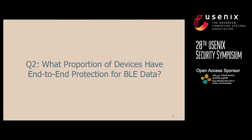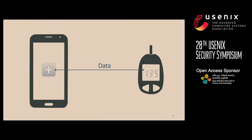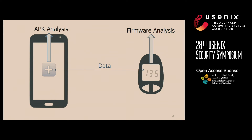That brought us to our next question: what proportion of BLE devices out there right now actually have end-to-end protection for their data? We're asking how much of the data traversing between a BLE device and an application is protected end-to-end — and by protection, I mean cryptographic protection. To test this, we could either test the BLE firmware or test the mobile application. Android APKs are much easier to come by and easier to decompile and analyze than BLE firmware, so we went the APK way.